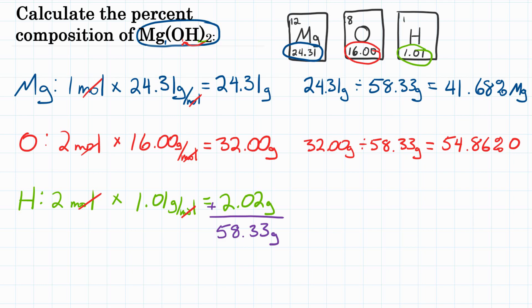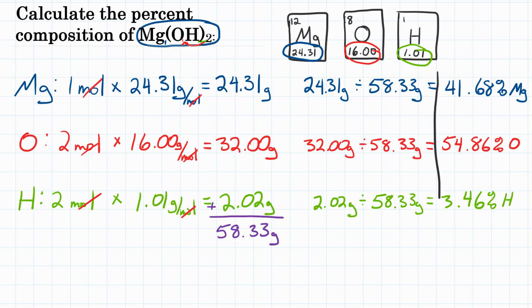That's for oxygen. And lastly, we have hydrogen making up 2.02 grams of the entire mass. Divide that by 58.33 grams, and we get 3.46 percent hydrogen. So our final answer — the percent composition for magnesium hydroxide is: 41.68 percent magnesium, 54.86 percent oxygen, and 3.46 percent hydrogen.